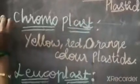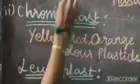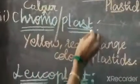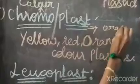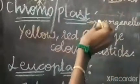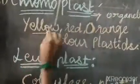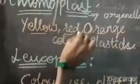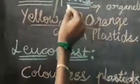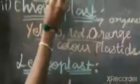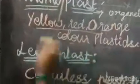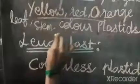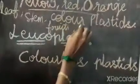The second one is chromoplasts. Chromo means color, and plast means organelles. Chromoplasts are yellow, red, and orange colored plastids. Their function is giving color to leaves, stems, fruits, and flowers.